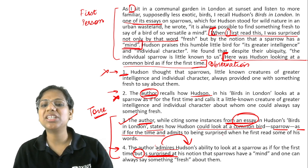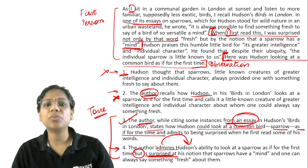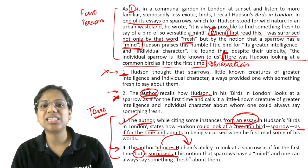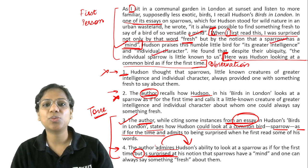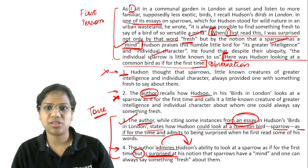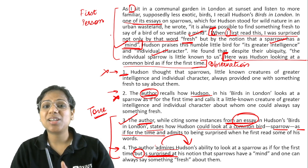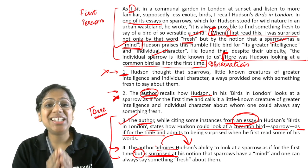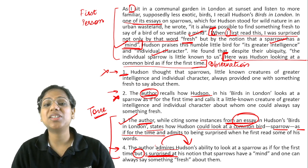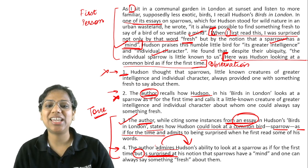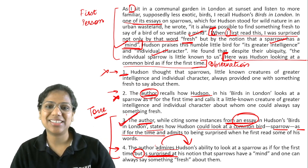And admits to being surprised when he first read some of his words — words such as fresh, mind, greater intelligence, individual character. These are instances and examples. In a summary question, you need not cite all the examples. Summary is not about examples; summary is about the essence of the paragraph, which is captured in Option 3, which is our answer.